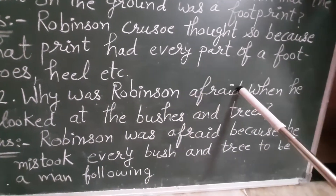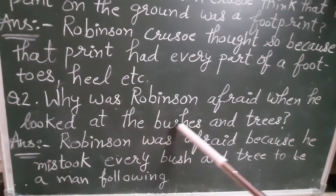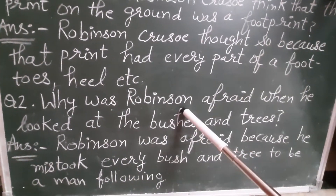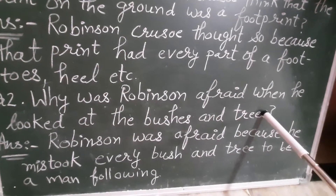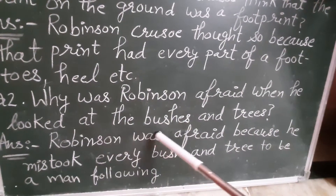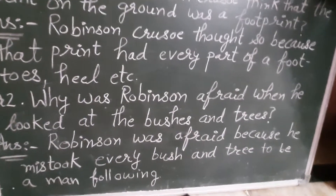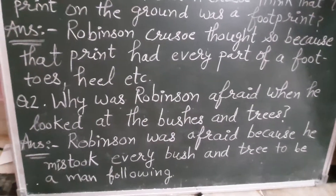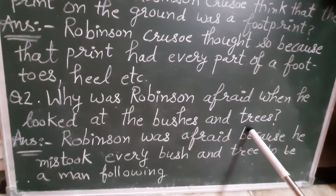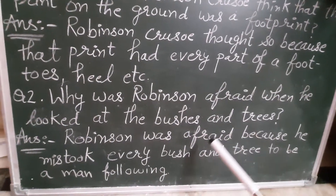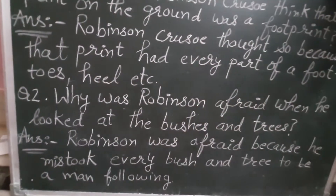Question number two: why was Robinson afraid when he looked at the bushes and the trees? Jo Robinson Crusoe tha woh dar kyon gaya tha jab usne dekha bushes aur trees ko? Woh bar bar peeche murke dekh raha tha. Woh itna dara hua tha ki usko jo bushes aur trees hain woh bhi aisa lagraha tha ki woh aadmi hain.